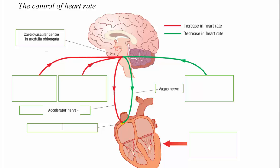Now these send messages to the SAN or the sinoatrial node in the wall of the right atrium.